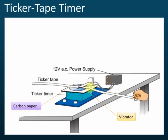When you switch it on, the vibrator will vibrate. We also have a carbon paper — this is the carbon paper. When the vibrator vibrates, at the end of the vibrator there is a pin. When the vibrator vibrates, the pin will hit on this ticker tape — this long paper.